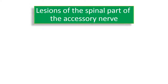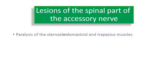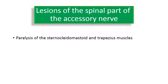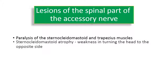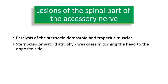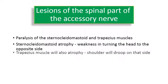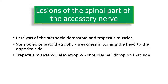Lesions of the spinal accessory nerve result in paralysis of the sternocleidomastoid and trapezius muscles. Sternocleidomastoid muscle atrophy results in weakness in turning the head to the opposite side. The trapezius muscle will also undergo atrophy, resulting in drooping of the shoulder on that side.